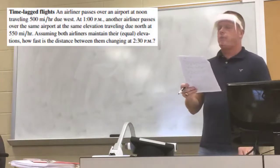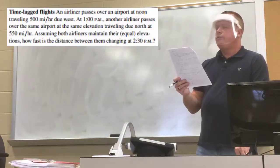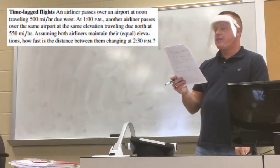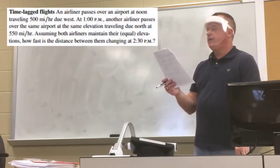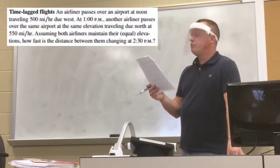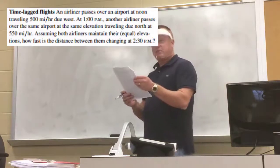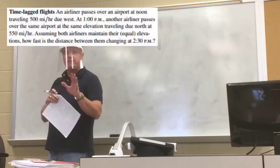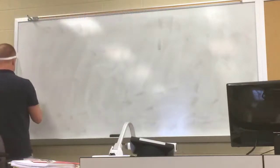An airliner passes over an airport at noon traveling 500 mph due west. At 1 p.m., another airliner passes over the same airport traveling due north at 550 mph. Assuming both maintain equal elevation, how fast is the distance between them changing at 2:30 p.m.? This one is more complex — we might need to draw a sketch.